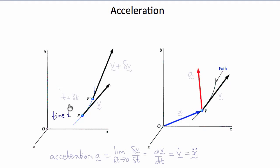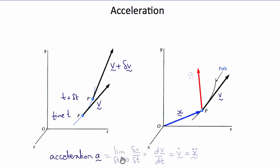Now we can define acceleration. At time t we have point P, and at time t plus delta t the particle is at point P'. The velocity vector at time t is v, and at time t plus delta t is v plus delta v. The acceleration vector a is the limit as delta t tends to zero of delta v over delta t, which is dv/dt, or v-dot, or x-double-dot. The acceleration vector is shown in red and has components both tangent to the motion and normal to the motion.